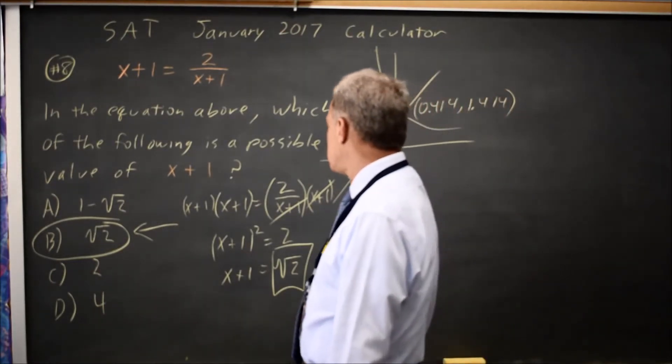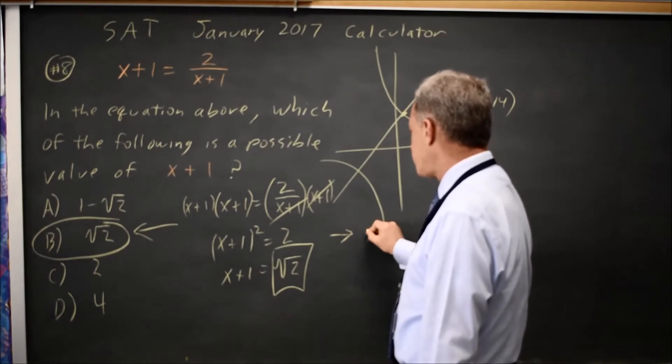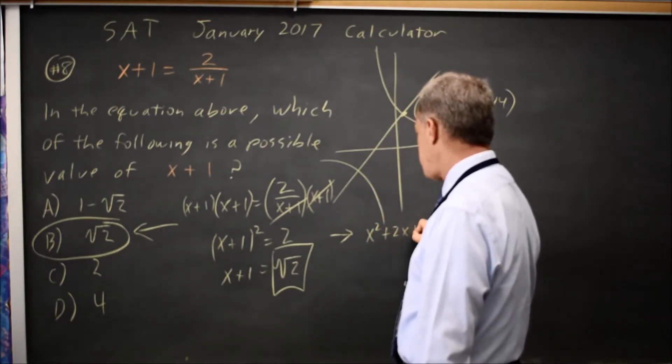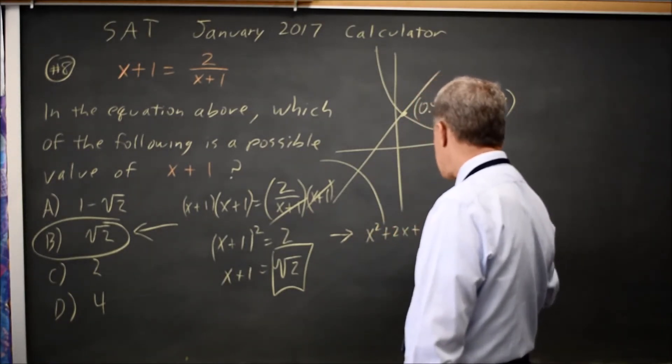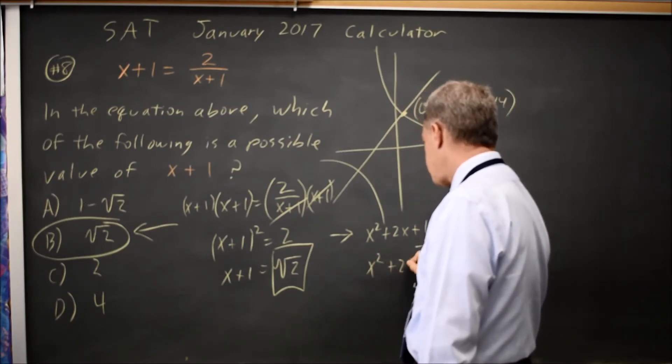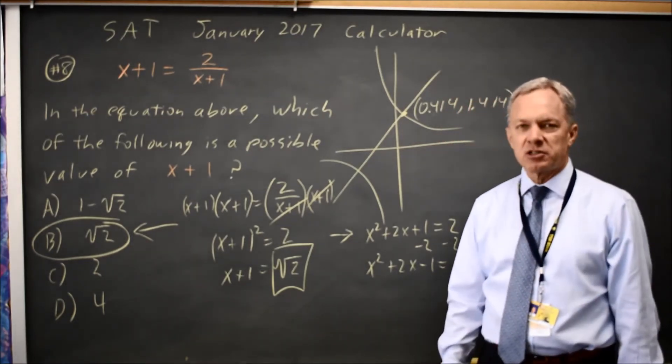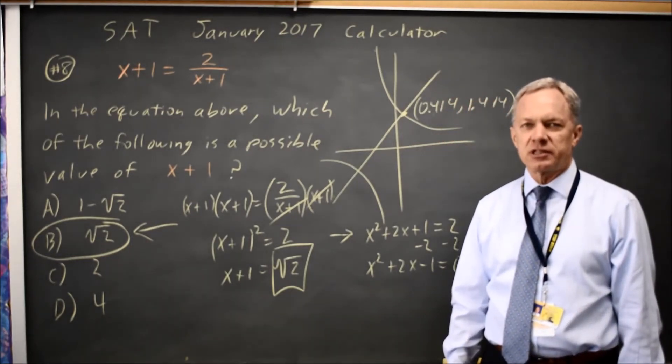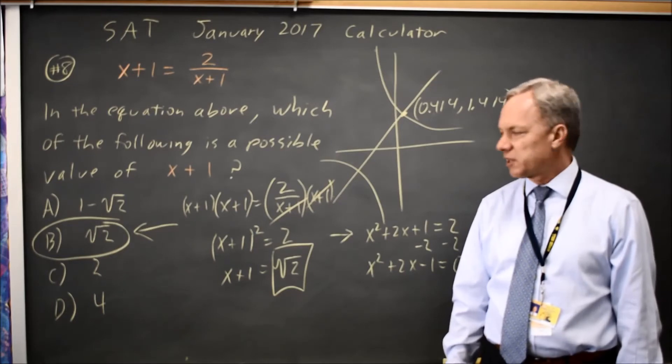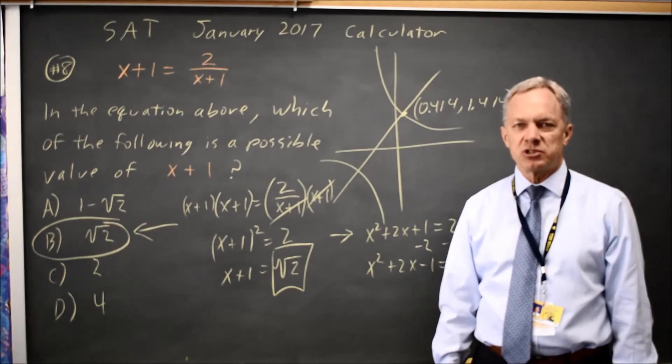The third option, from this I can FOIL on the left: x squared plus 2x plus 1 equals 2. Subtract 2 from both sides. x squared plus 2x minus 1 equals 0. I can use the quadratic formula here to find x and then add 1 to that answer. That's going to be ugly, and so I'll stop there because that's clearly not as efficient as either of the other two approaches.